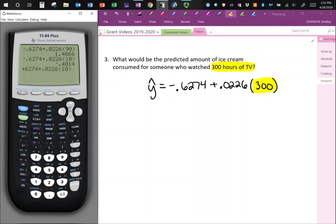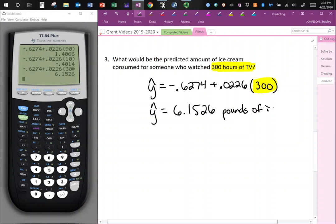So 300 goes in. So using my trick, I'll do second enter and I'll change that 10 to 300. And I get y hat is equal to 6.1526. And this is pounds of ice cream.